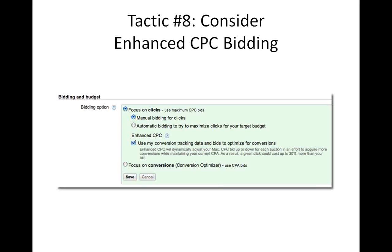We talked about optimizing for conversions and cost per conversion. Google AdWords has a really cool tool called Enhanced CPC. It uses your conversion tracking data and your bids to optimize for conversions and get as many conversions as possible. If you're an advanced AdWords user and can do this manually, that's always better — but if you're just getting started, or you don't have the time to do it manually, Enhanced CPC is a really good feature.